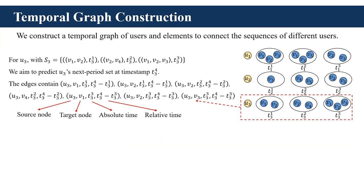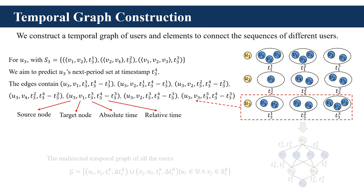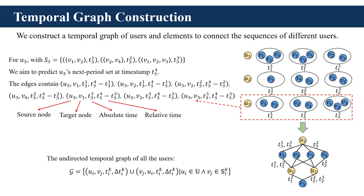In the first component, we construct the temporal graph to connect all user sequences. The temporal graph is a bipartite graph whose nodes are composed of both users and elements, and the edges denote user-element interactions with time information. For user U3, we add seven edges in the temporal graph where each edge consists of the source node, the target node, the absolute time, and the relative time. After establishing edges for all users, we also add reversed edges from elements to users to make the temporal graph undirected.